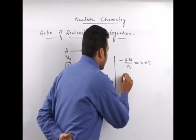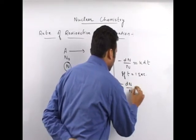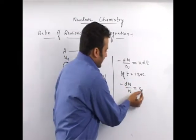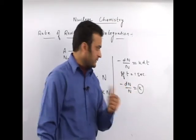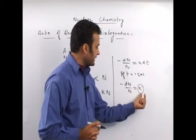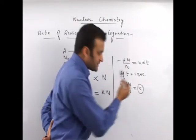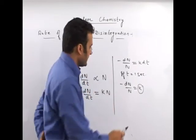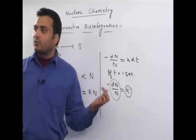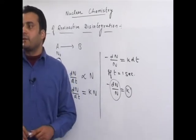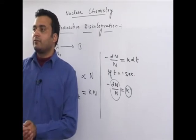If time interval is one second, then minus dN upon N is equal to K. So the decay constant K is the fraction of the atoms getting disintegrated in one second. Minus dN is the number disintegrating, N is the total number of atoms present at that time. So, the fraction of atoms disintegrating per second is called the decay constant or disintegration constant.